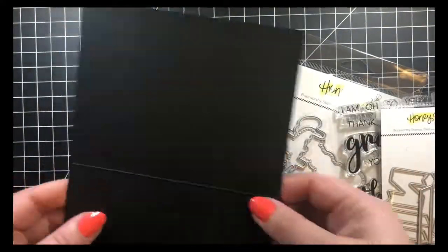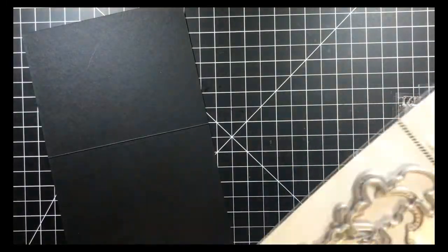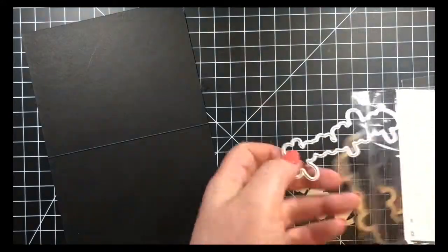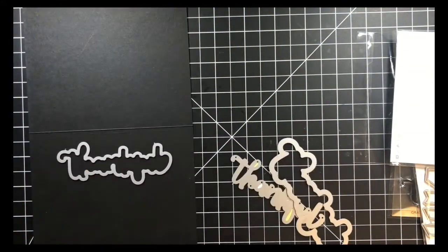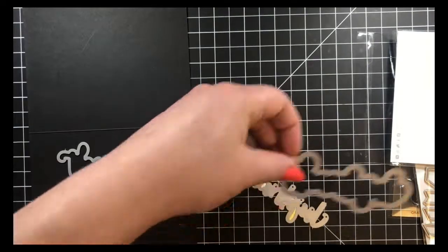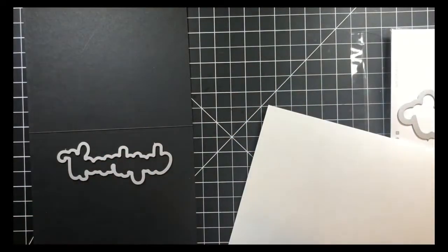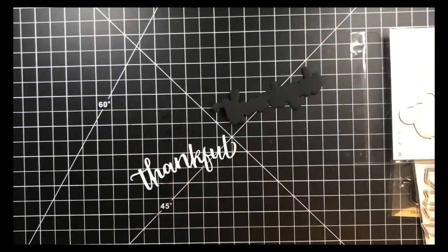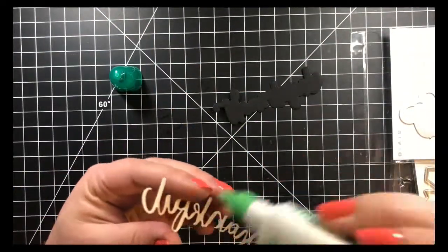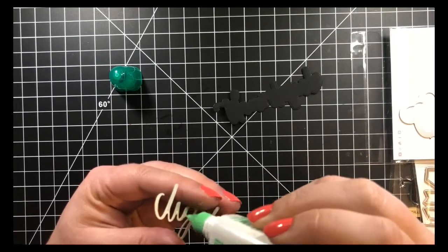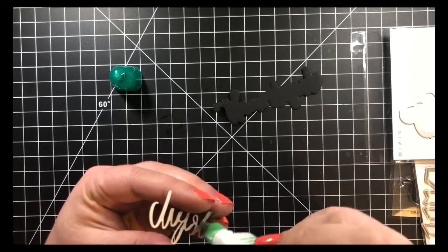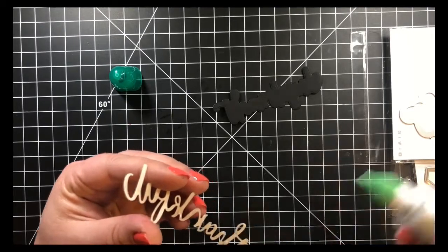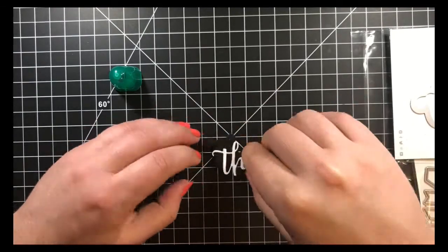Next for my sentiment, I'll be using the Thankful dies from Honeybee Stamps as well as the Grateful stamp set. I've used this in a couple of cards a few days ago. I love this die set and I love this stamp set, so you'll probably be seeing a lot of it. I cut out the shadow piece in black cardstock and the word die out of white, and I'm just using my Tombow Mono Multi glue to go ahead and adhere that word onto the frame.